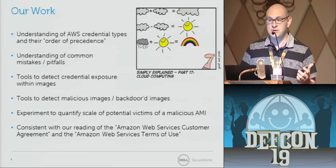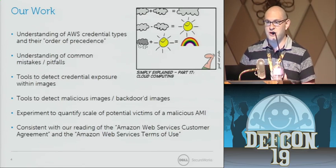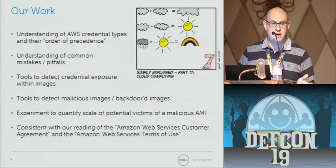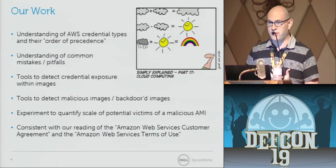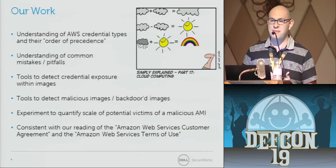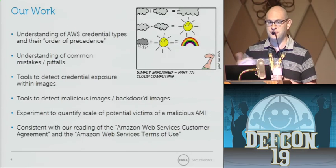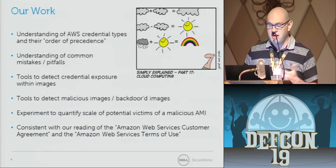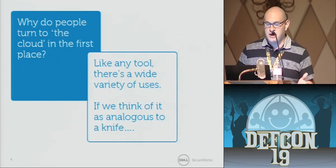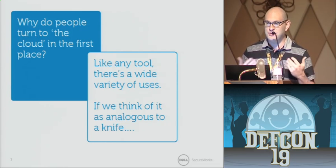With that in mind, we developed a set of tools to detect instances of these problems — basically cases where credentials could be exposed within Amazon's virtual machine images published by third parties, and also to detect malicious or backdoored images in the public image set. We also performed an experiment to better quantify the scale of potential victims: if you release a malicious virtual machine image in Amazon's cloud, how many victims could you get, and how many virtual machines could you actually take control of. Throughout this work, we maintained consistency with our reading of the Amazon Web Services customer agreement and their published terms of service.